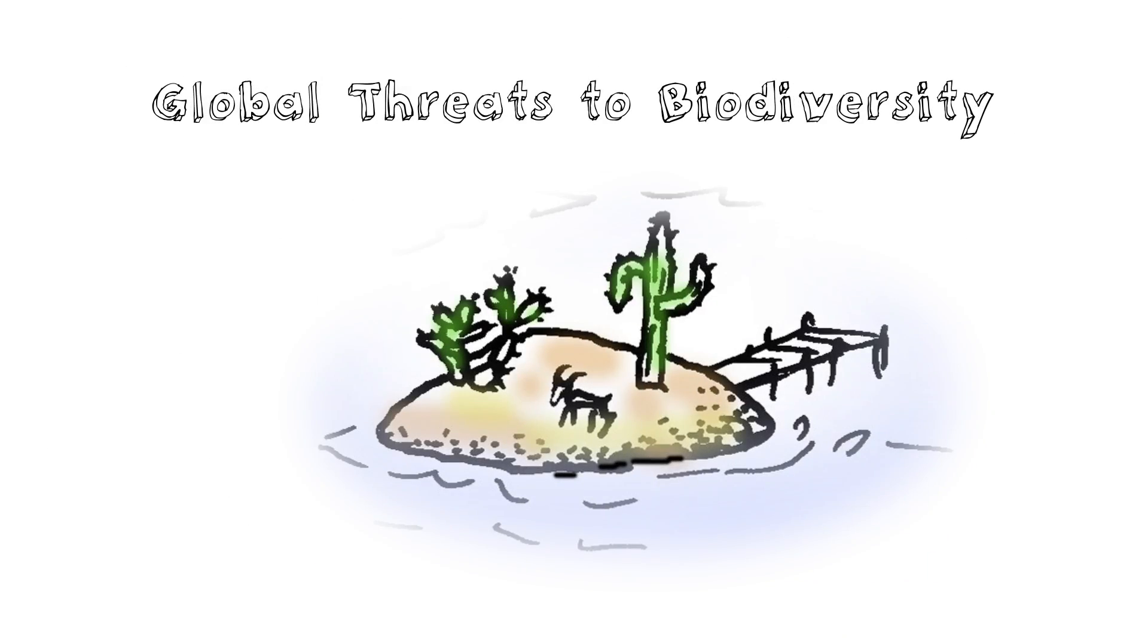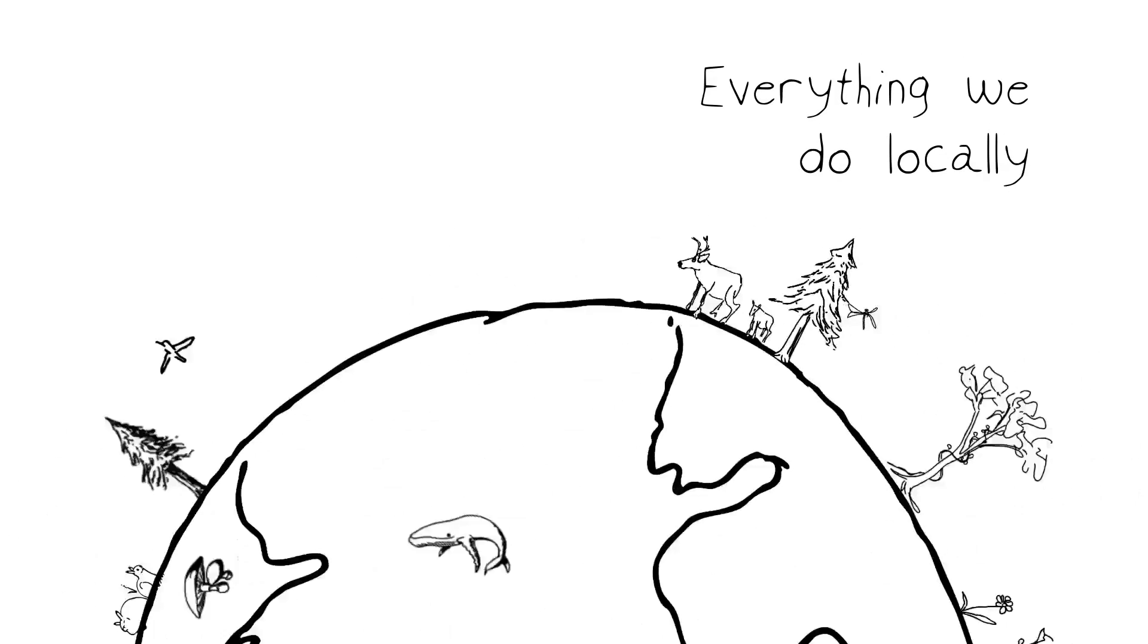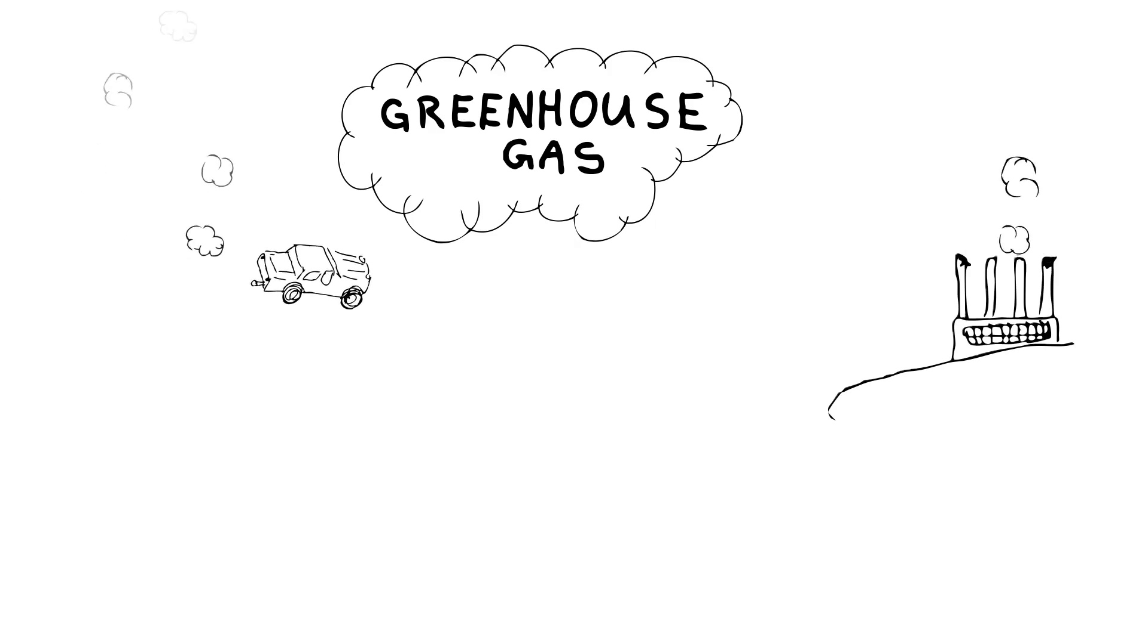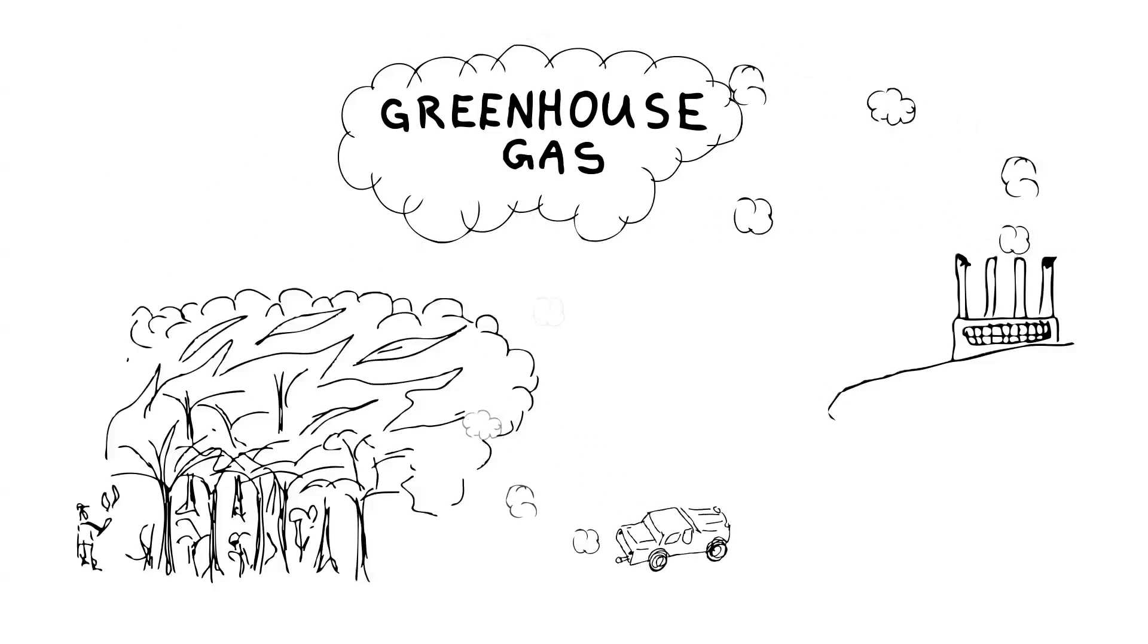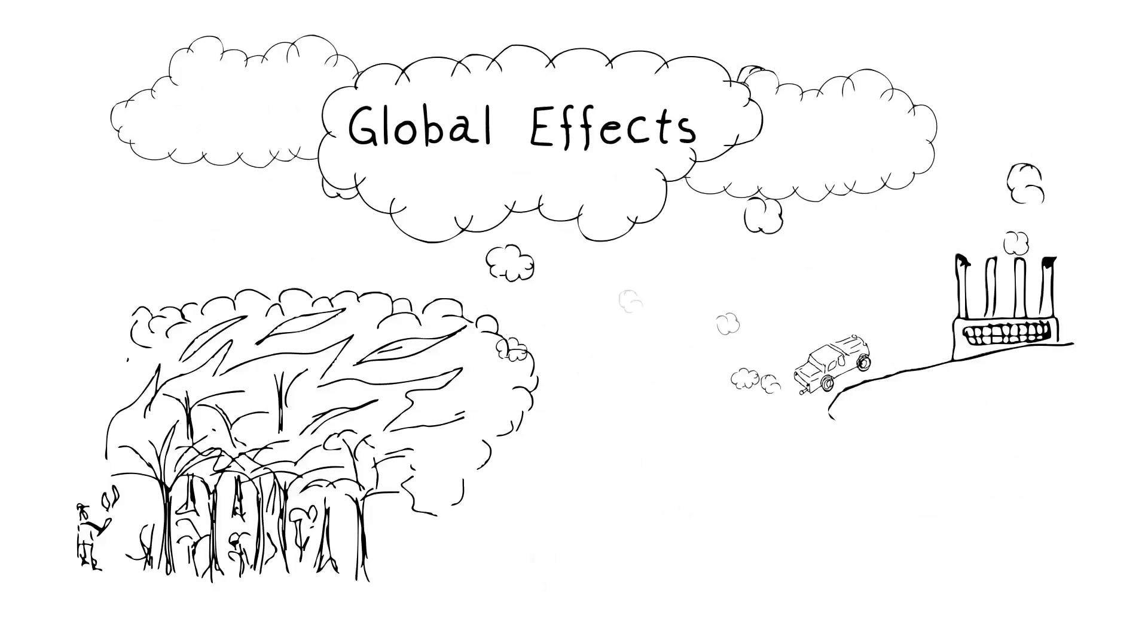What are some of the global threats to biodiversity? First, I want to emphasize that virtually everything we do locally has global consequences. When we talk about something like a greenhouse gas or a pollutant, that's something we produce locally, but even these local activities and impacts can have global effects.